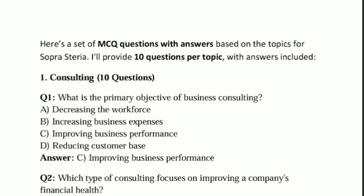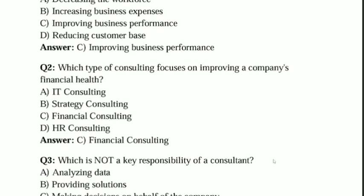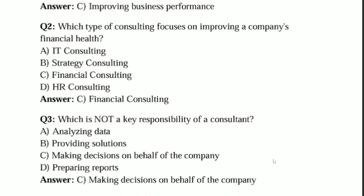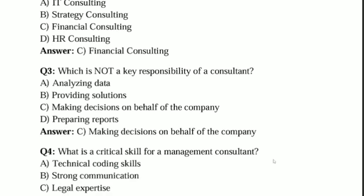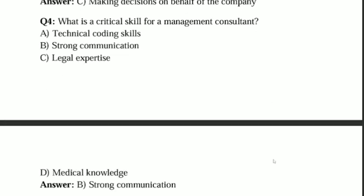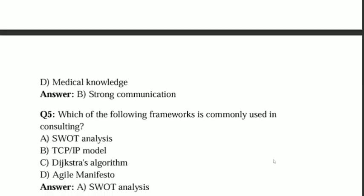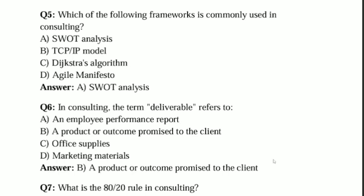Consulting — first topic. Question 1: What is the primary objective of business consulting? Answer C: Improving business performance. Question 2: Which type of consulting focuses on improving a company's financial ability? Answer C: Financial consulting. Question 3: Which is not a key responsibility of a consultant? Answer C: Making decisions on behalf of the company. Question 4: What is a critical skill for an individual consultant? Answer B: Strong communication. Question 5: Which of the following frameworks is commonly used in consulting? Answer A: SWOT analysis.